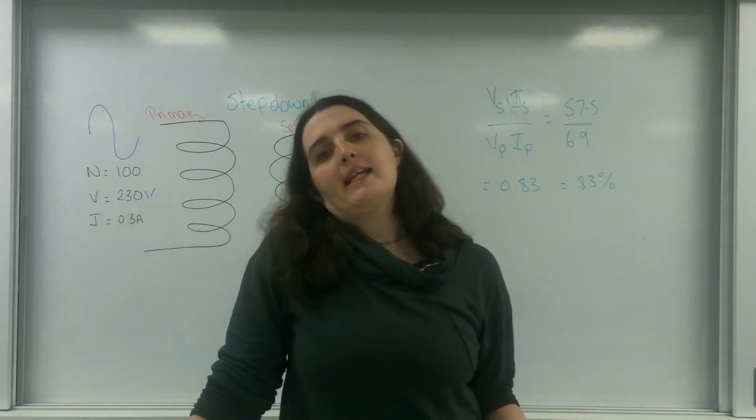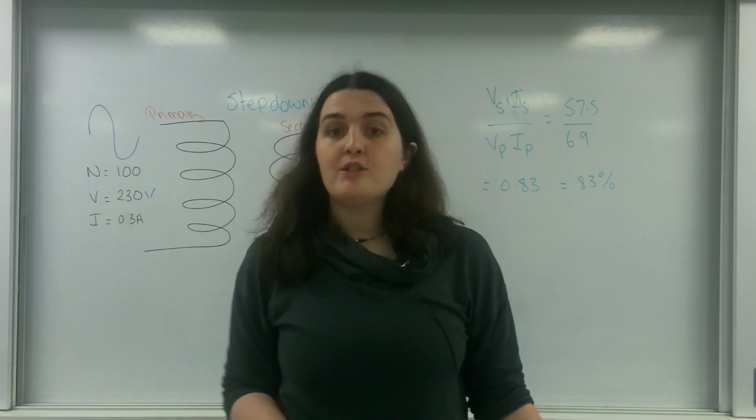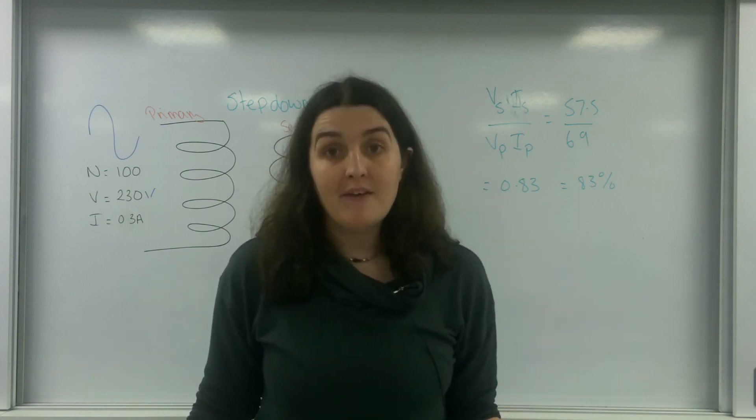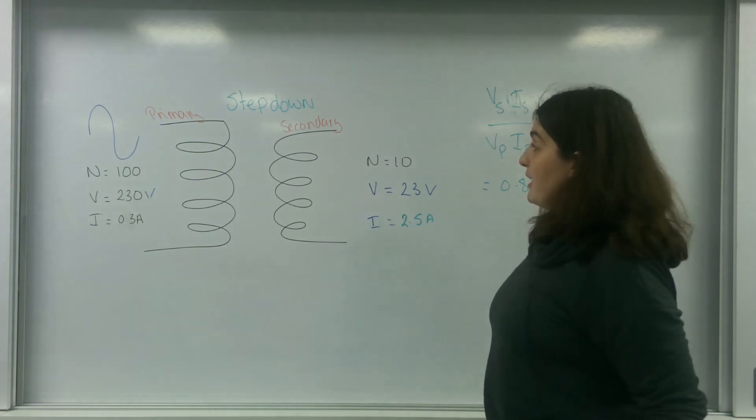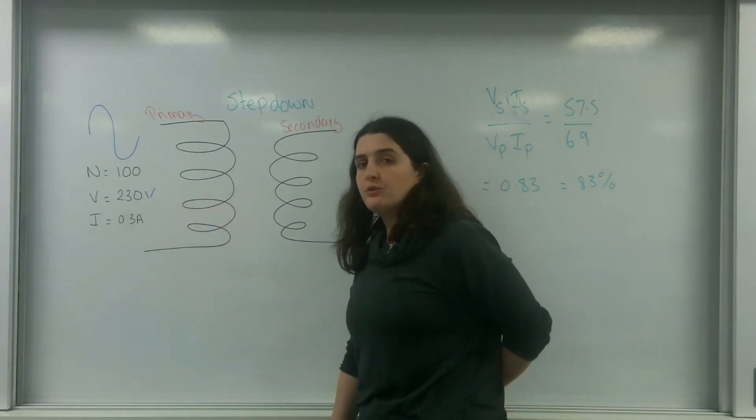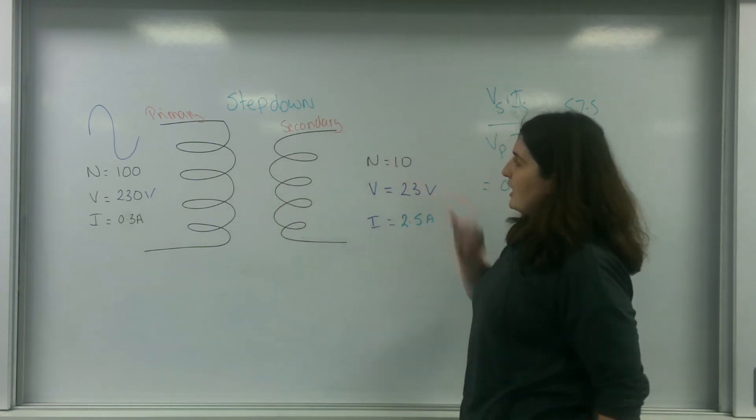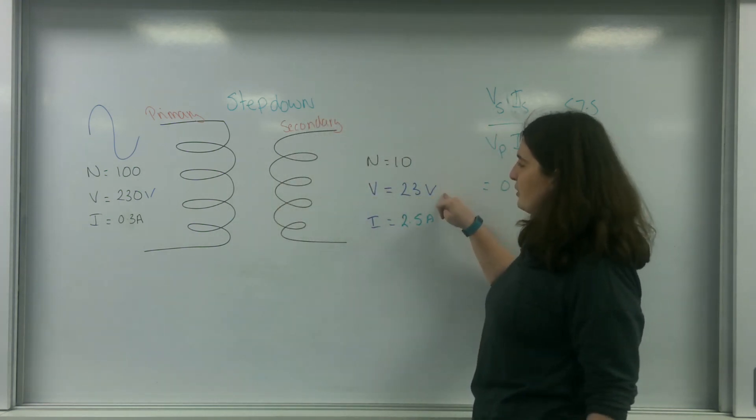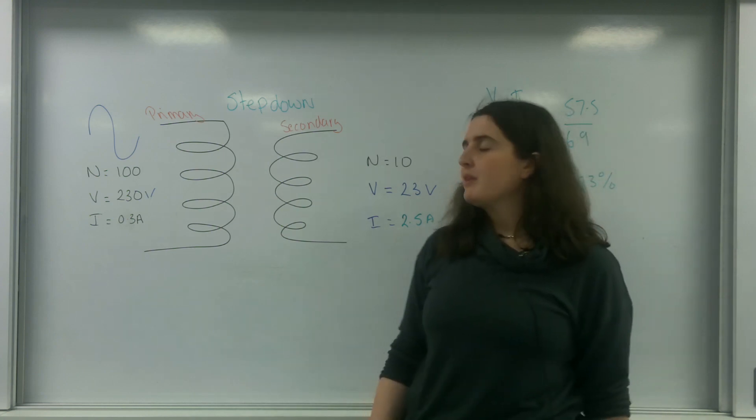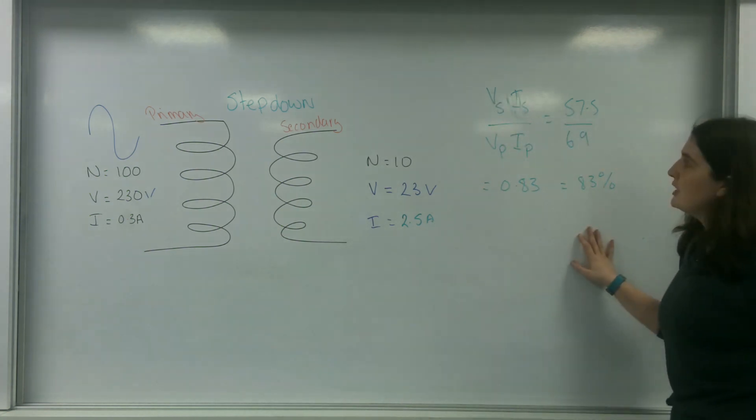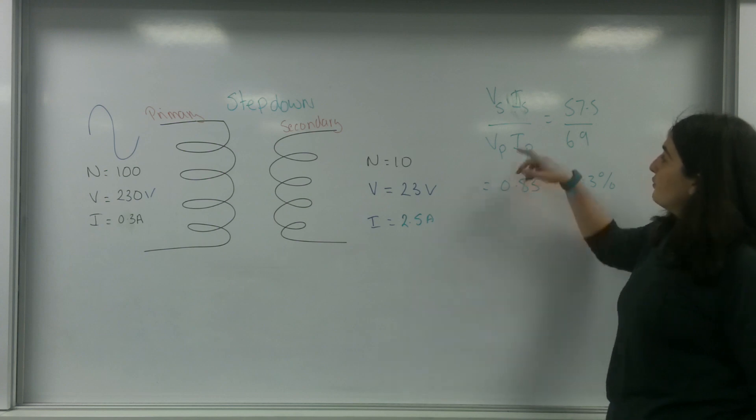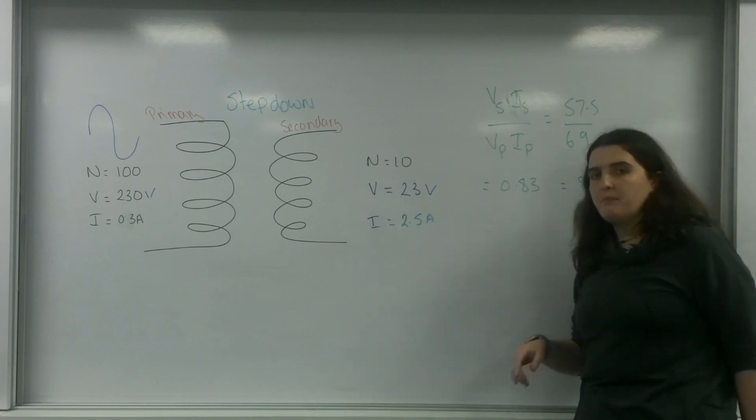In my last video I talked about some transformer calculations. I had a transformer that was only 83% efficient. Here's my information: I had 230 volts on the primary side and a current of 0.3A, and on my secondary coil I had 23 volts but I only had 25 amps appearing. If I look at the information using the formula to find efficiency—voltage on the secondary times current on the secondary over voltage on the primary times current on the primary—I ended up with 83% efficient.